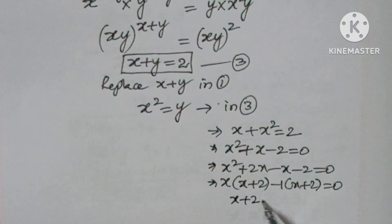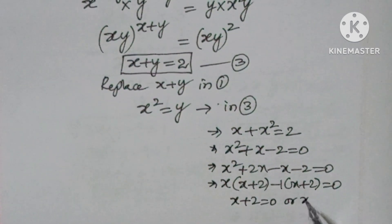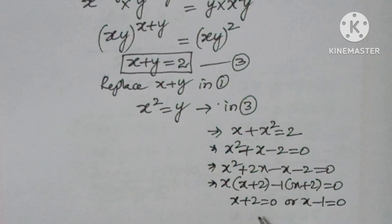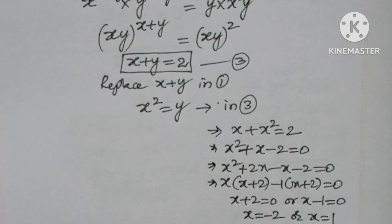So x plus 2 equals 0 or x minus 1 equals 0. x equals minus 2 or x equals 1.